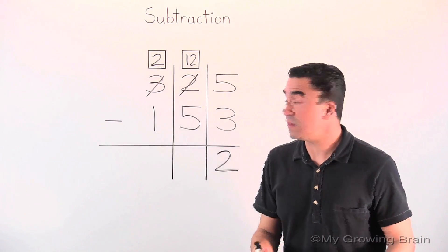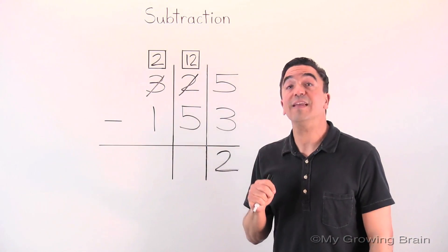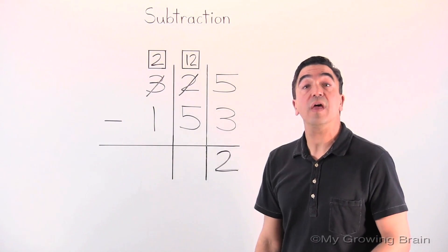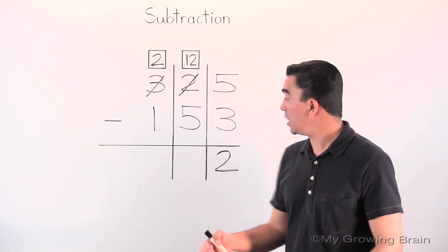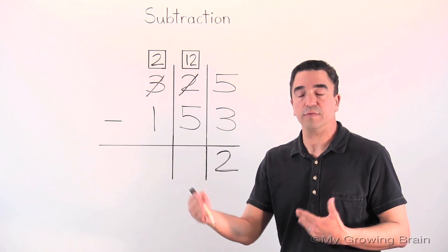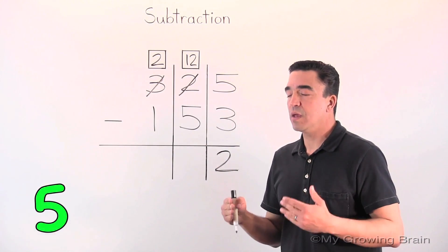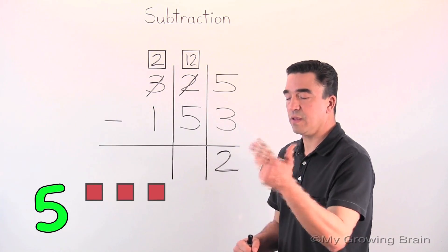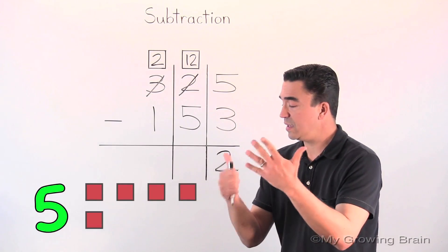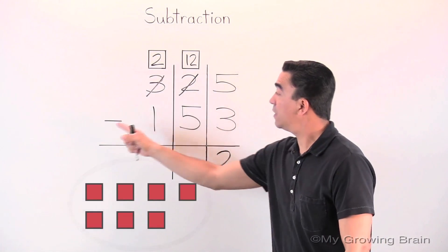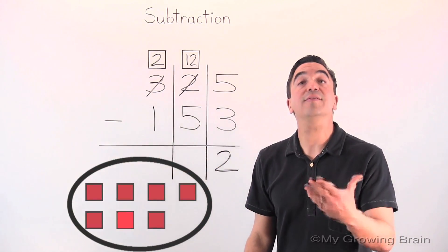All right. Let's subtract. Twelve tens minus five tens. Let's use the counting on strategy. I'm going to put the five in my head and count on to twelve. Okay. Here we go. Five, six, seven, eight, nine, ten, eleven, twelve. Twelve minus five is seven.